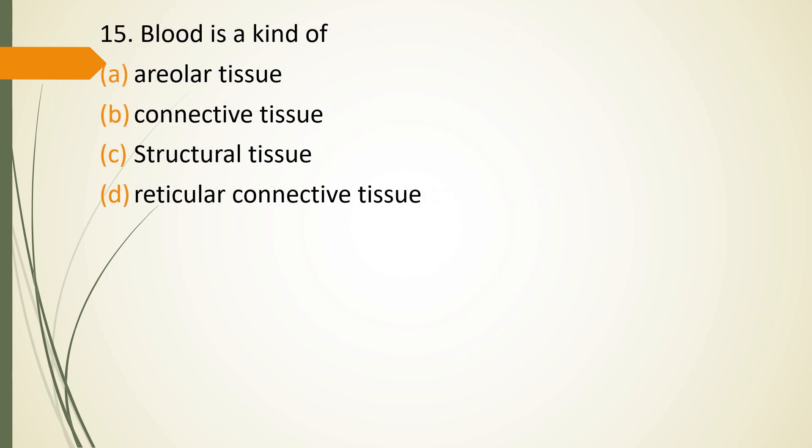Question 15. Blood is a kind of? Areolar tissue, connective tissue, structural tissue, reticular connective tissue. Correct answer is option B. It is a kind of connective tissue.